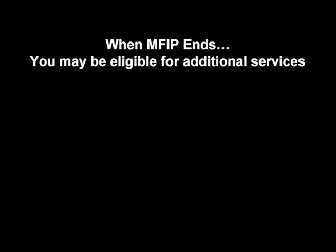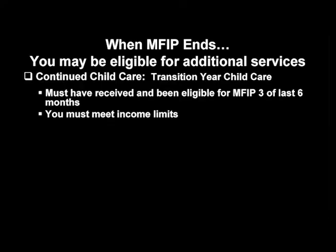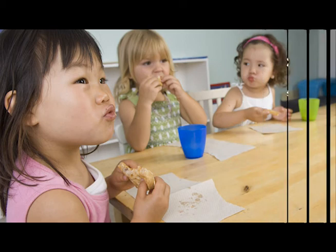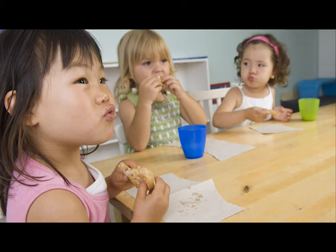When MFIP ends, you may be eligible for additional services. Transition Year Child Care is available when cash assistance ends. One of the criteria for this program is that you must have received and been eligible for MFIP three out of the last six months. You must also meet the income limits. If you are interested in Transition Year Child Care, please talk to your child care worker so that they can determine if you are eligible for this program.